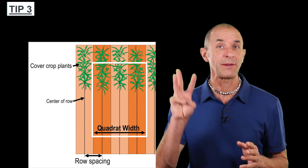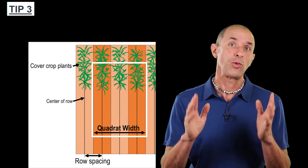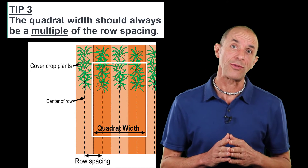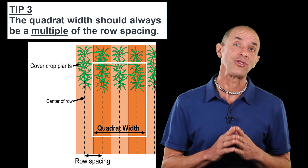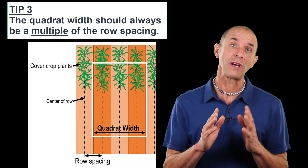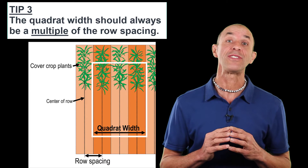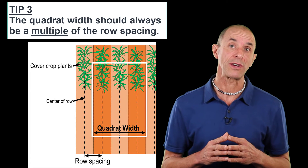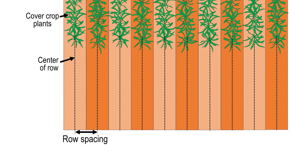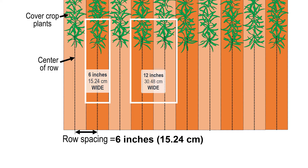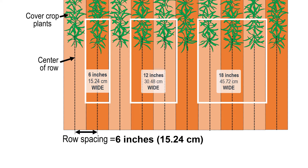And that leads me to tip number three. The width of the quadrat that's perpendicular to the rows should always be a multiple of the row spacing — this is where many serious sampling problems can occur. For example, let's say that your row spacing is six inches. Your quadrat width could be six inches, 12 inches, or 18 inches, regardless of the length of the quadrat.